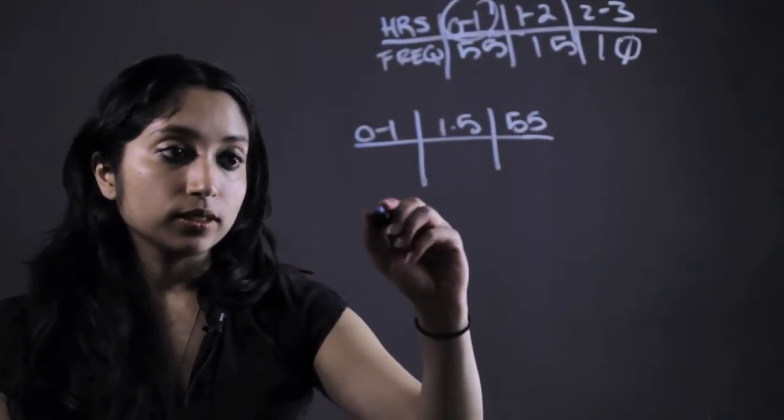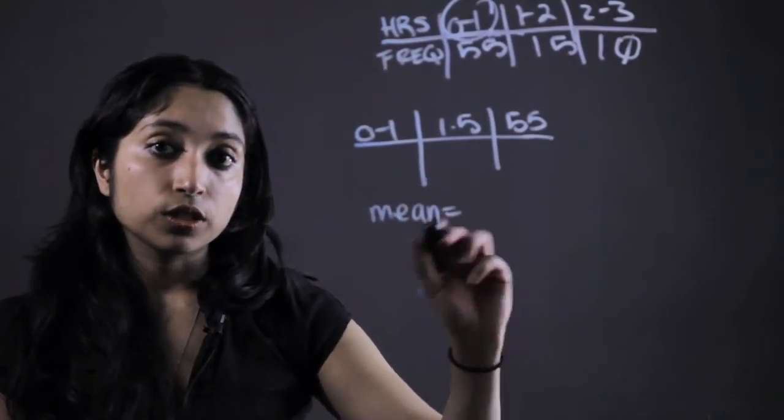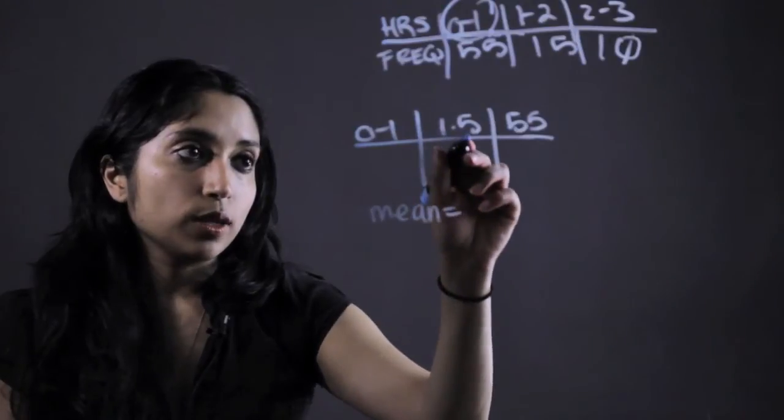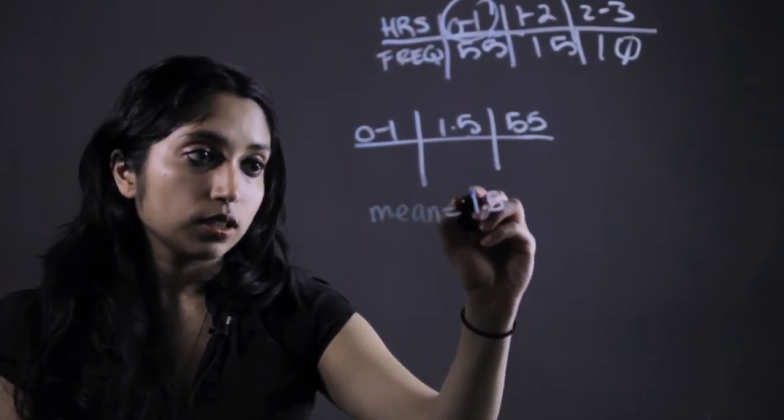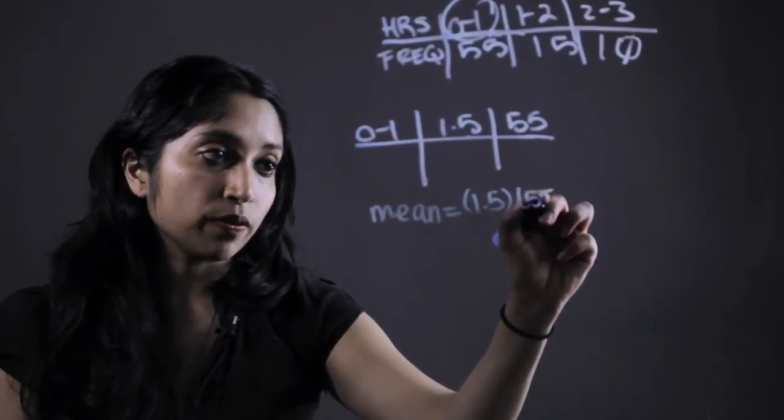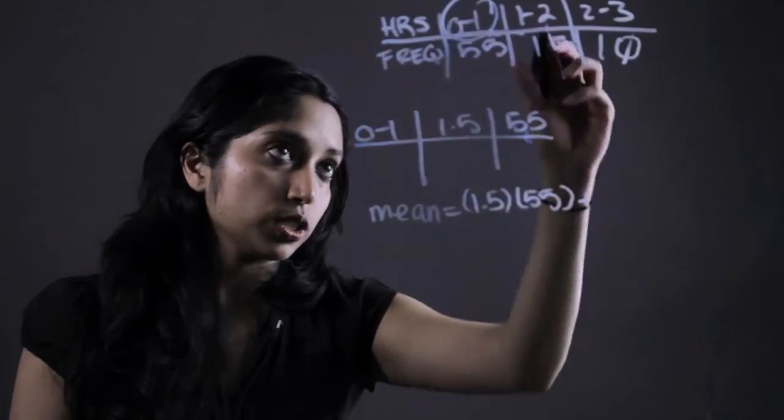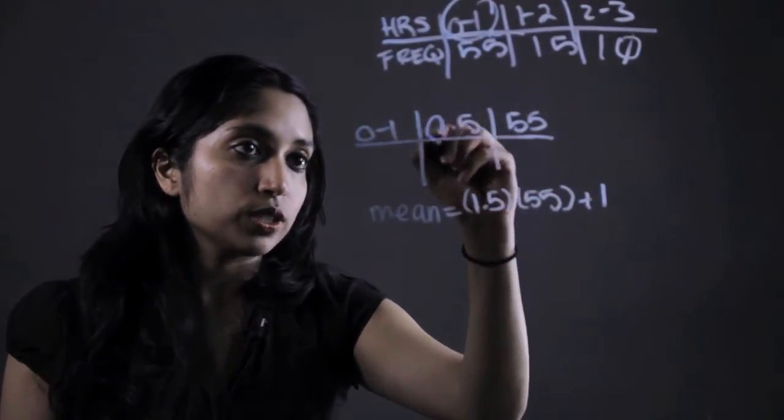So the mean, if you remember, is just the sum of all the values divided by the total number of values. So instead of taking 1.5 and adding that together 55 times, we would just multiply it by 55. It actually makes our lives easier. Same thing up there. We would just take—excuse me, that should be 0.5.